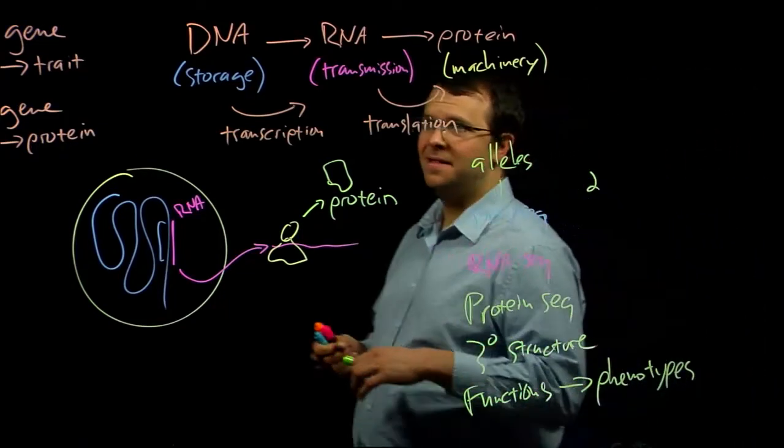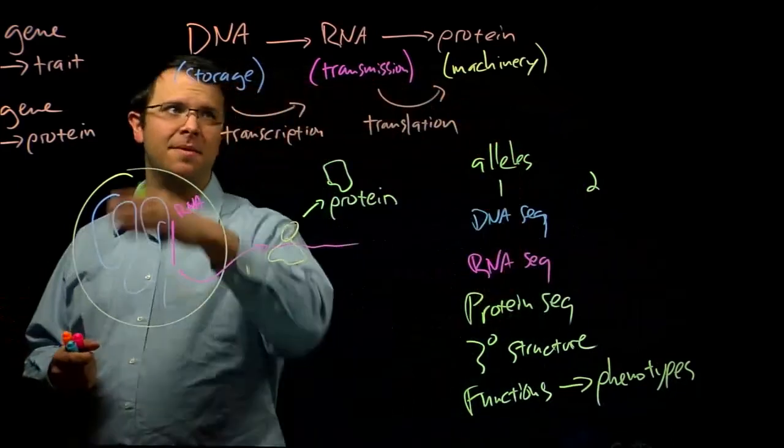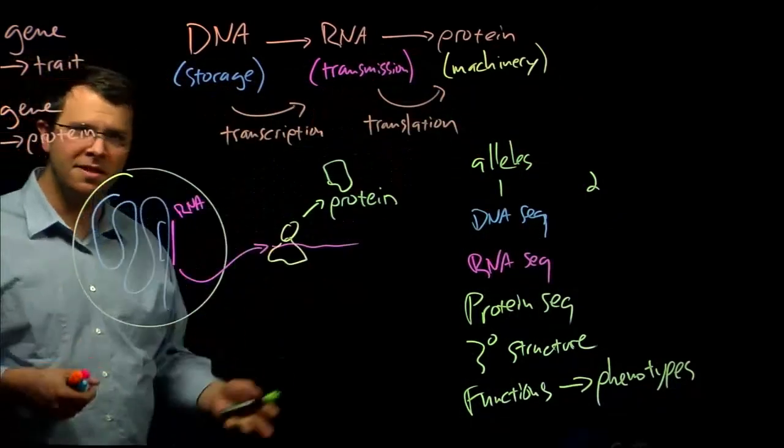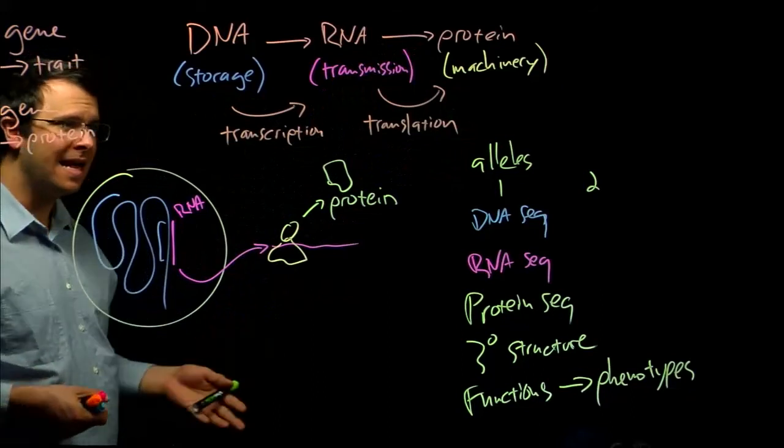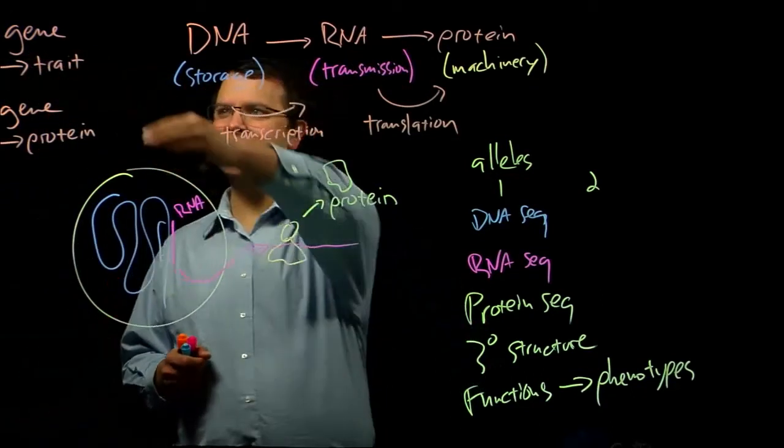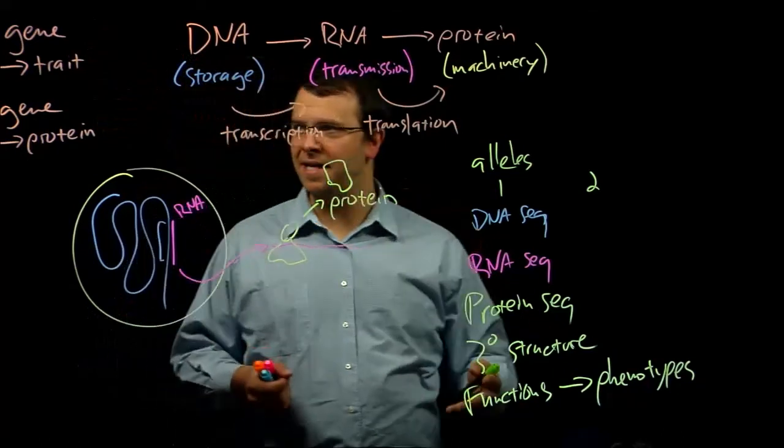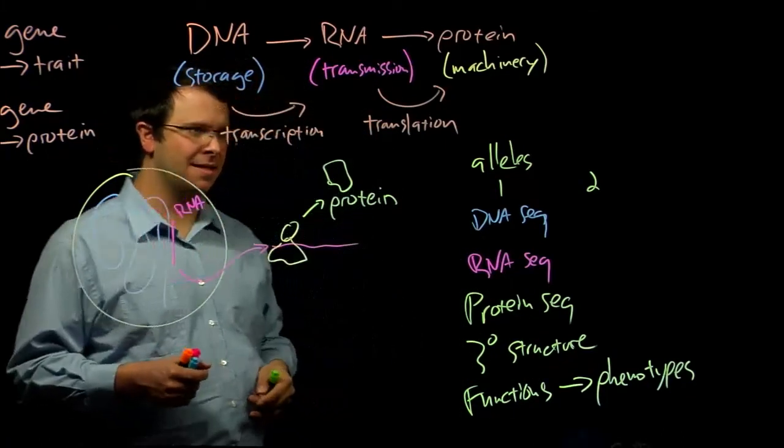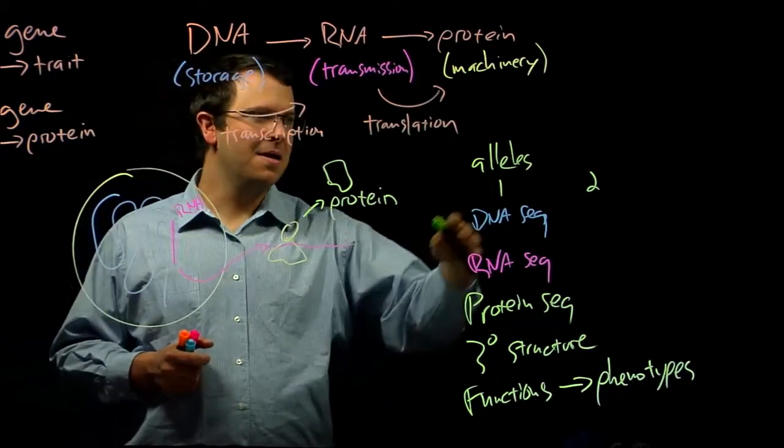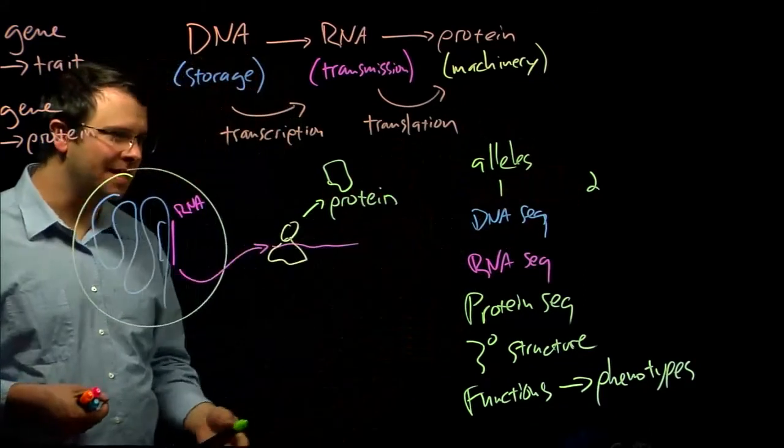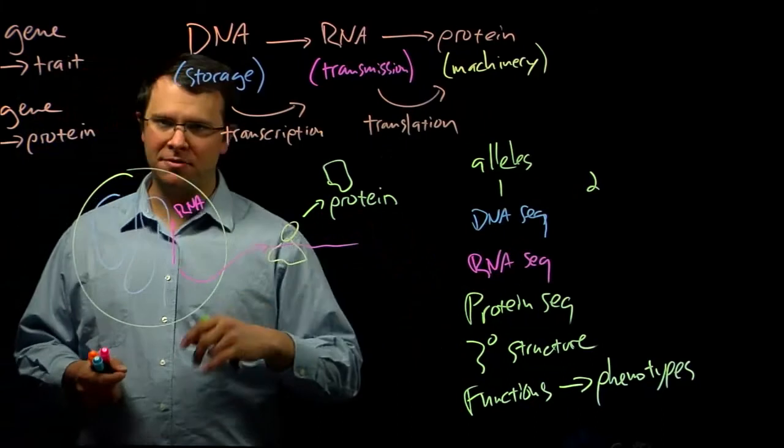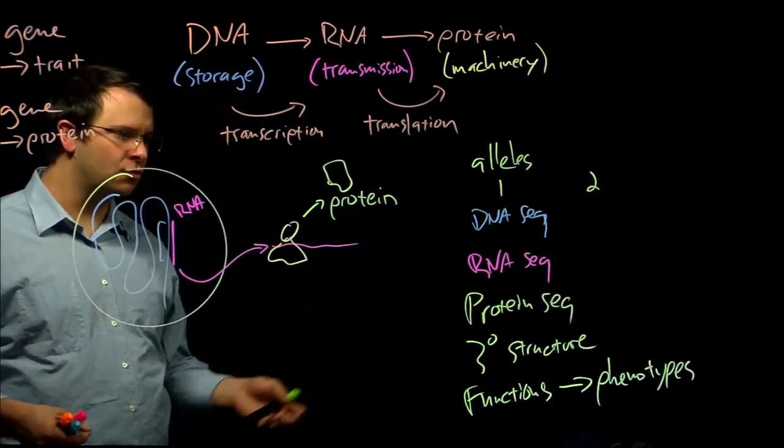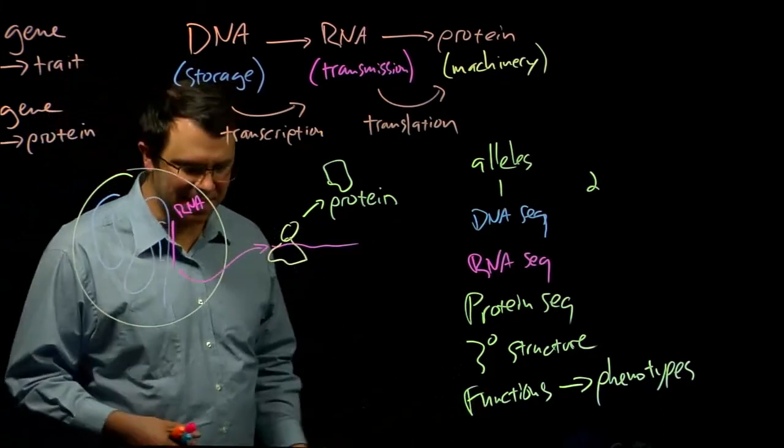And organisms whose proteins are operating differently have different phenotypes. This idea of the central dogma from DNA to RNA to protein via transcription and translation links the idea of genes giving rise to traits to genes and proteins. Different alleles have different sequences lead to proteins with different shapes, different structures, different functions, and different phenotypes.